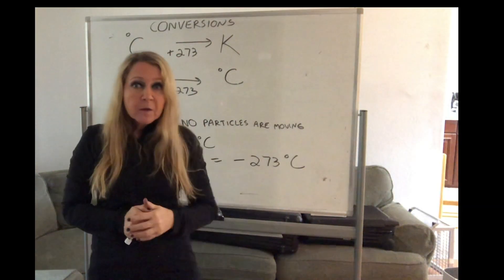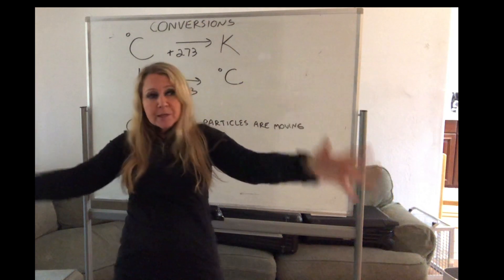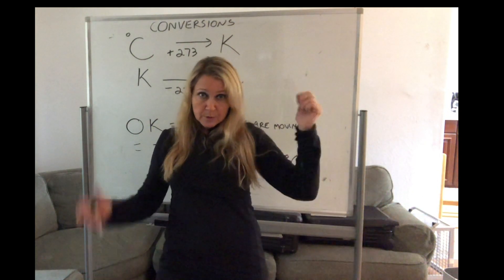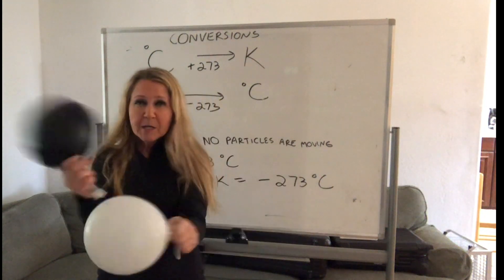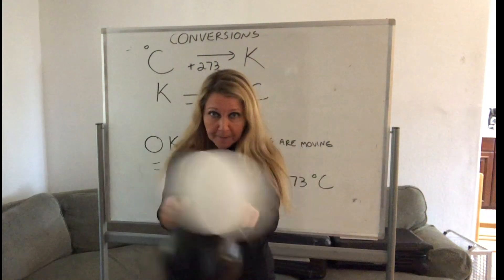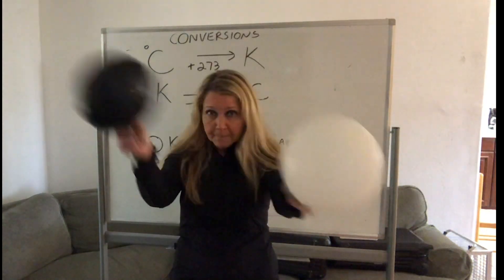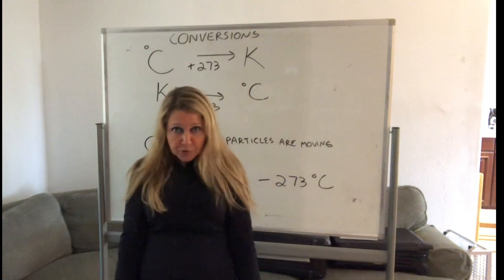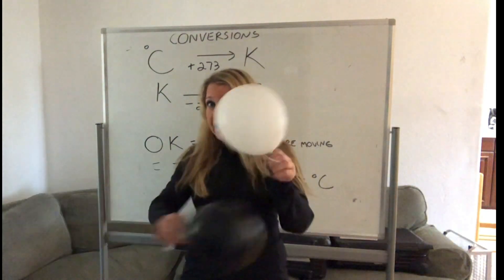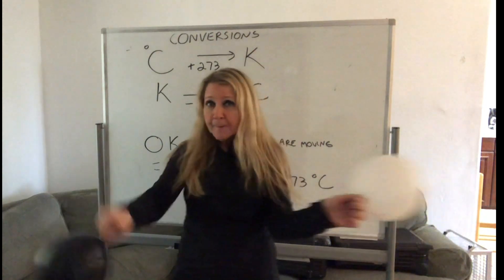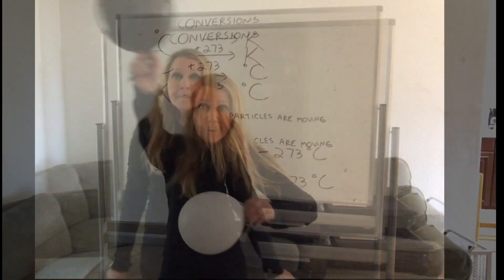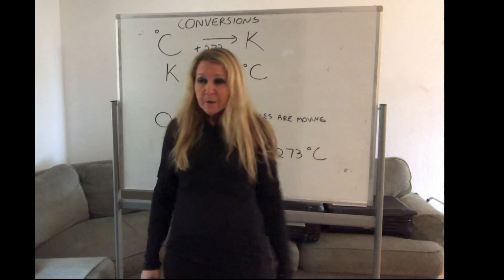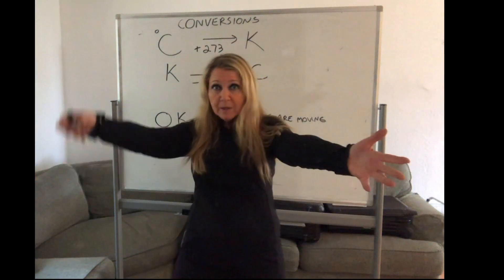We're going to look at three gas laws and the relationships of three properties of gas. We have pressure — gas pressure — which is the number of collisions happening between gas particles. We have temperature, which is a measurement of the average kinetic energy, or how fast the particles are moving. And then we have volume, which is the amount of space the gas occupies.